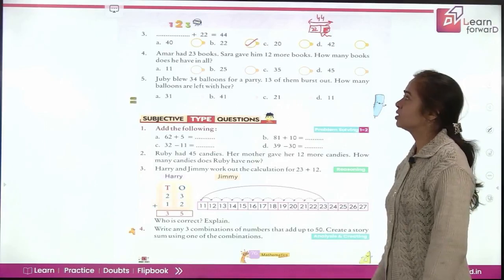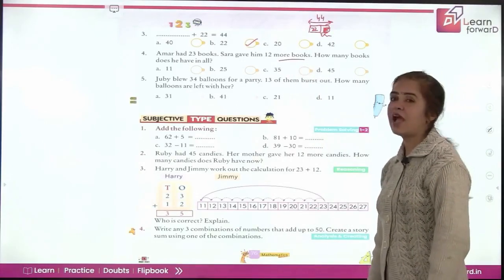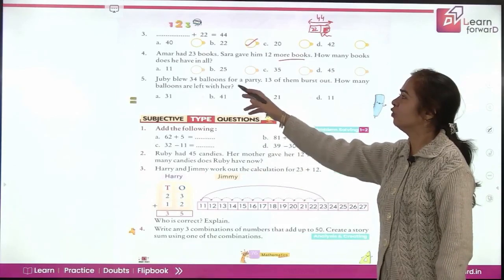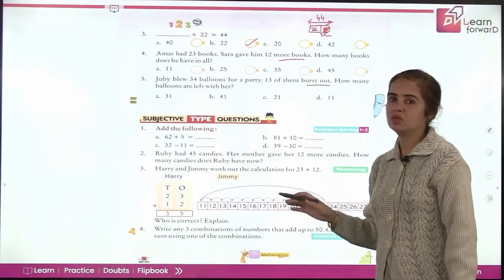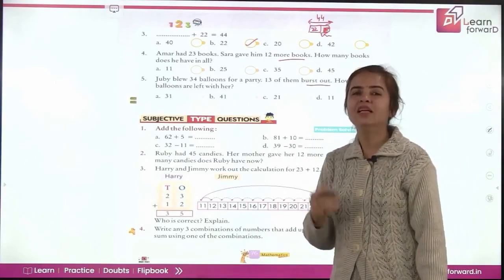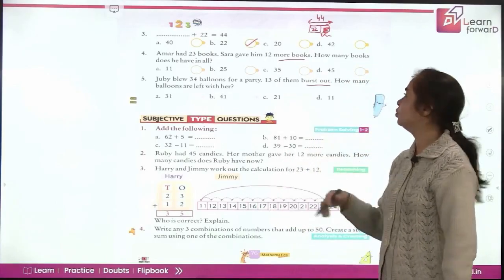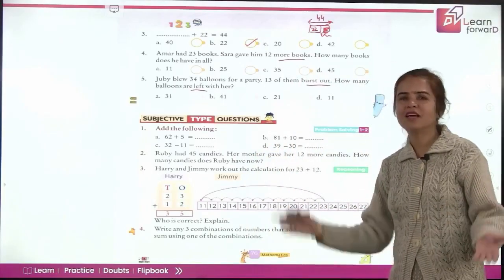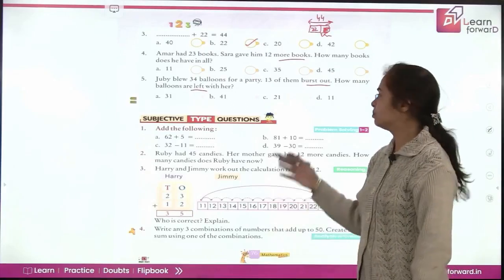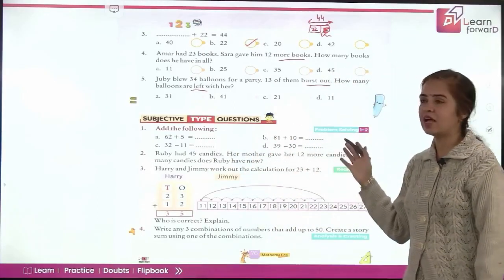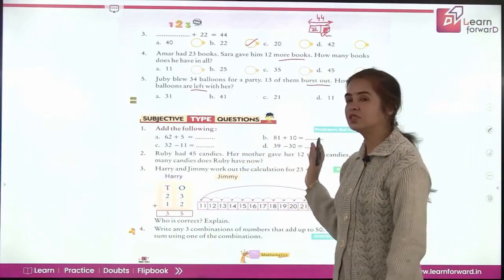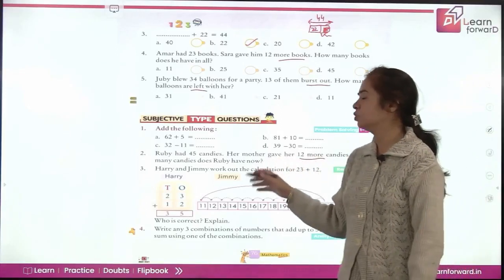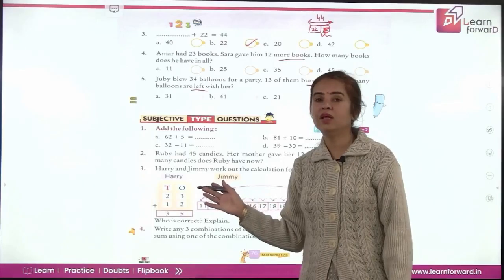Amar had 23 books. Sarah gave him 12 more books. How many books does he have in all now? What will you do again? Add and find out the answer yourselves. Ruby blew 34 balloons for a party. 13 of them burst out. It happens with you also when you are making decorations for a birthday party. Some of the balloons burst out. Isn't it? So same happened with Ruby also. How many balloons are left with her? Yes, I could hear a loud sound from you subtraction. So do it yourselves and find out how many balloons are left with her. Now subjective type questions add the following. You will be doing yourselves. I am sure you can just solve. Subtraction also is an easy task for all of you now. Ruby had 45 candies. Her mother gave her 12 more candies. How many candies does Ruby have now? So now here what will you be doing? You will be adding.